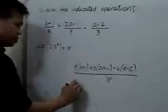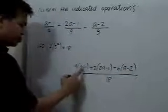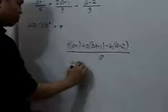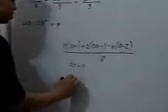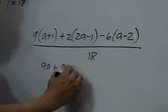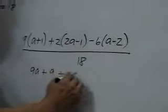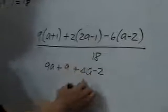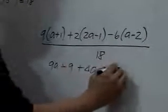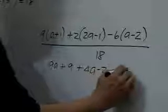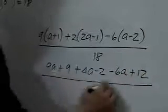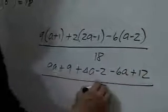Distributing 9 in this first term, we have 9a plus 9. Distributing 2, we have 4a minus 2. And distributing the −6, we get 6a plus 12, all over 18.